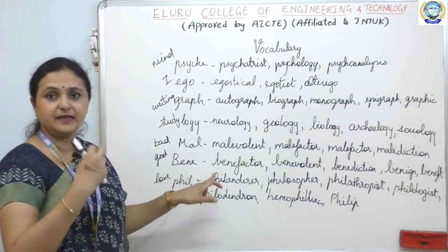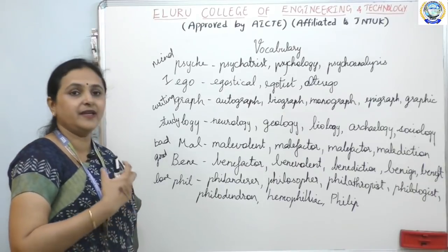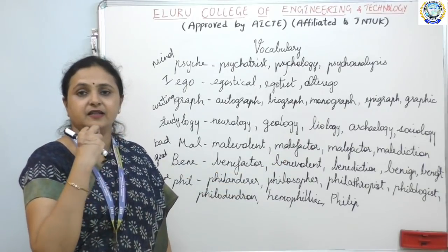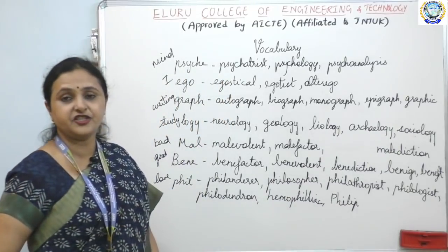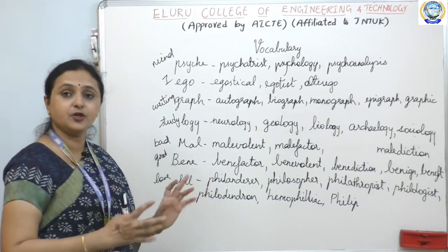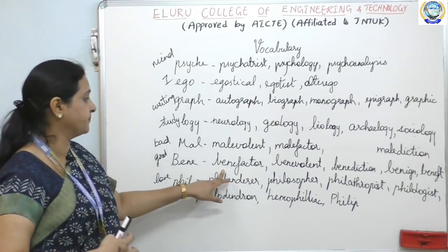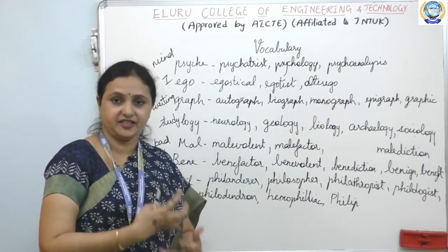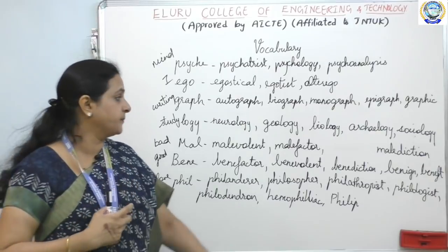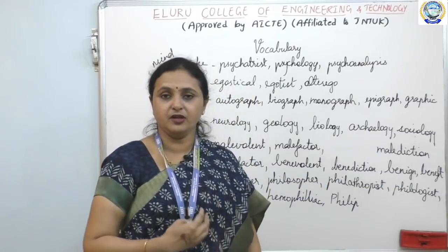Mal means bad. So malevolent is somebody who has bad intentions. Malefactor is the reason for something bad happening. Malediction means saying something bad. The opposite is 'ben', which means good. So: benefactor — the reason behind something good; benevolent — doing something good for others; benediction — saying something good; benign — cool, calm, good; benefit — for the good of others.